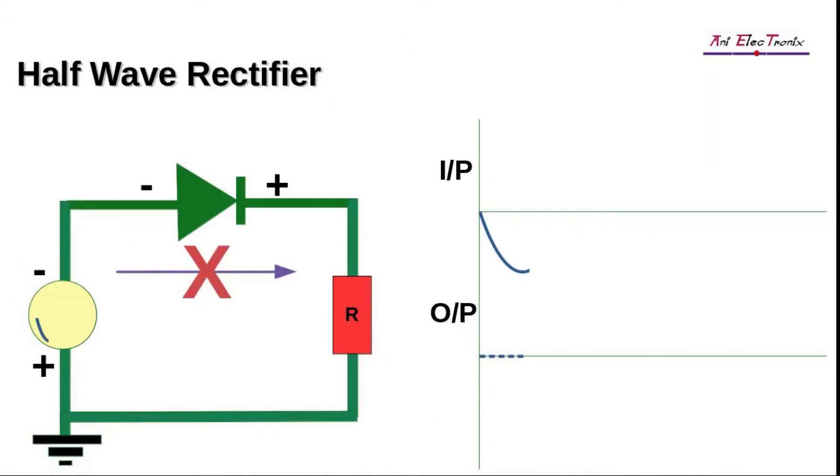While a negative half-cycle is occurring, the diode will become reverse-biased and stop conducting or clip off the negative half-cycles.